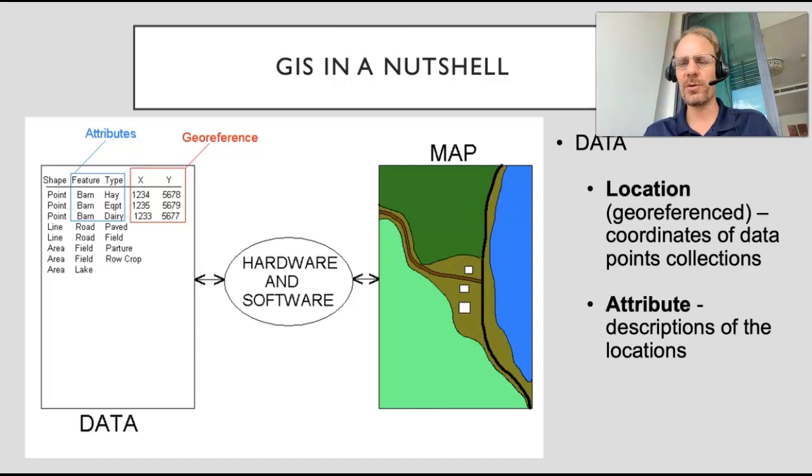You can see that word right here - attribute data. That's information about that point. For example, you want to navigate to your favorite restaurant or you want to find a restaurant. You want to eat, maybe you want to eat amok sak trey because amok is delicious. So you get on Google Maps or Apple or whatever and you type in fish amok and it shows you several different restaurants on the map that you could go to.